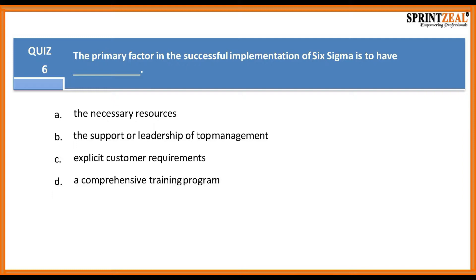Question six: The primary factor in the successful implementation of Six Sigma is to have what? The necessary resources, the support of leadership of top management, explicit customer requirements, or a comprehensive training program?